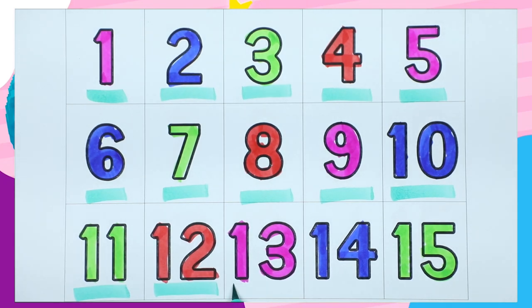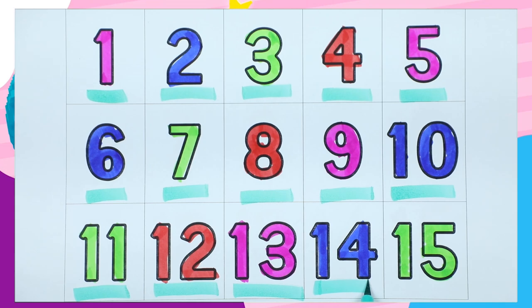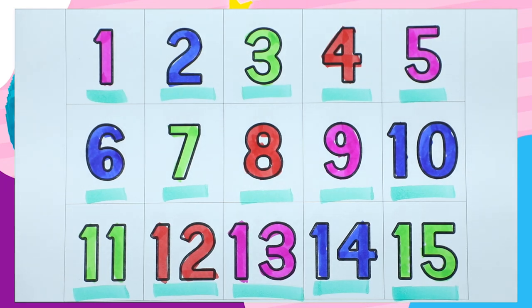One three, thirteen. Which color is this? Pink. One four, fourteen. It's blue color. One five, fifteen. It's green color. Thank you for watching. Please like and subscribe. Bye bye, kids.